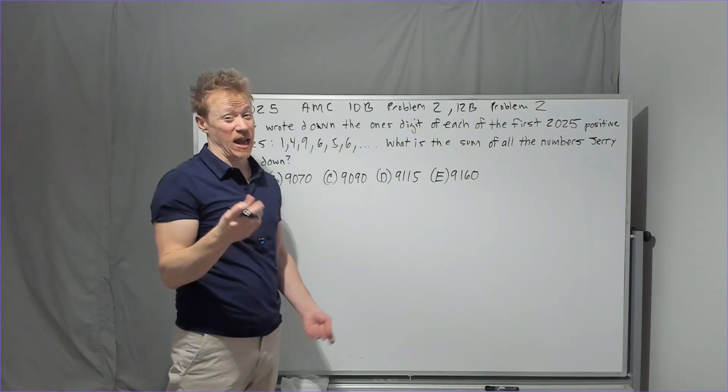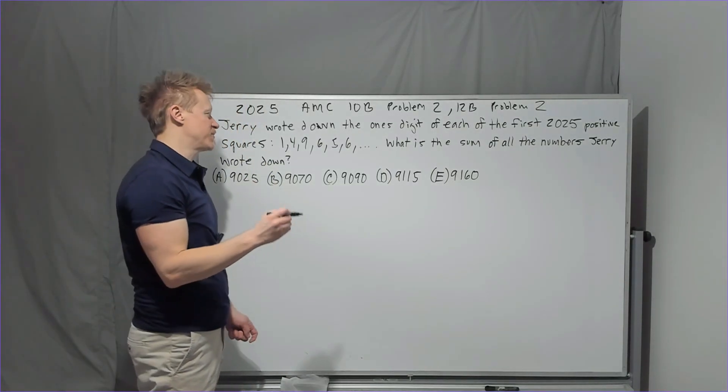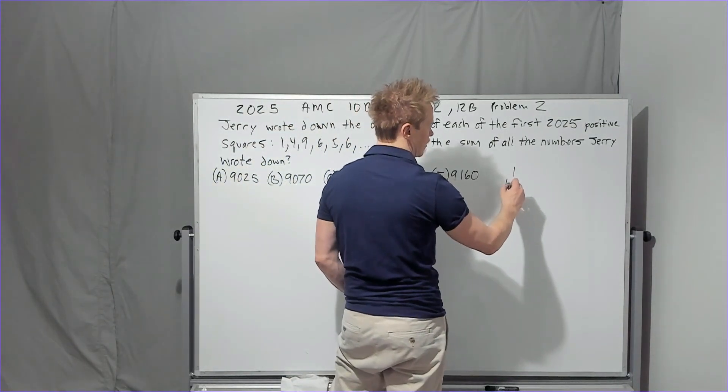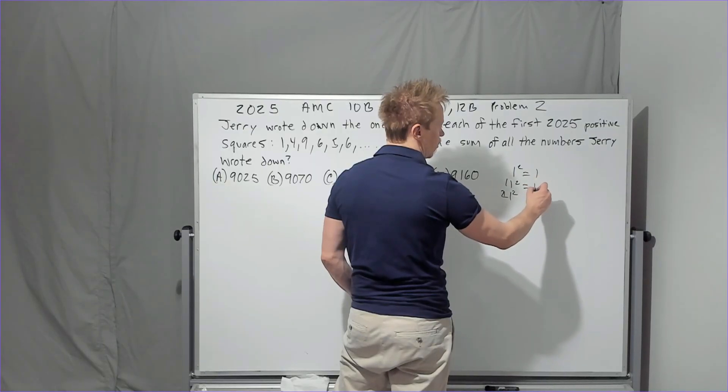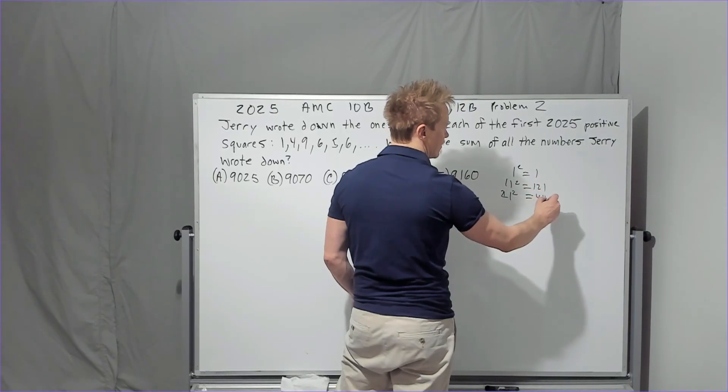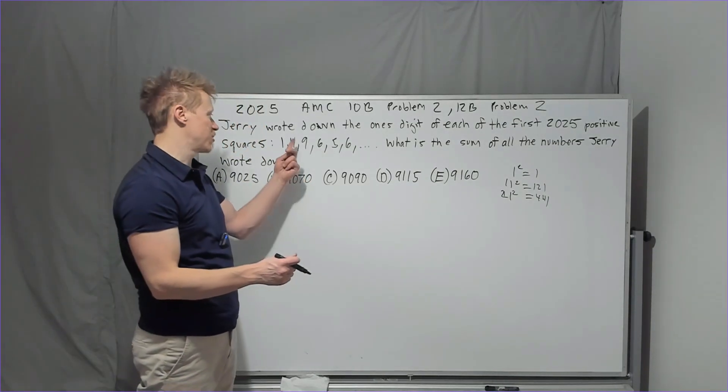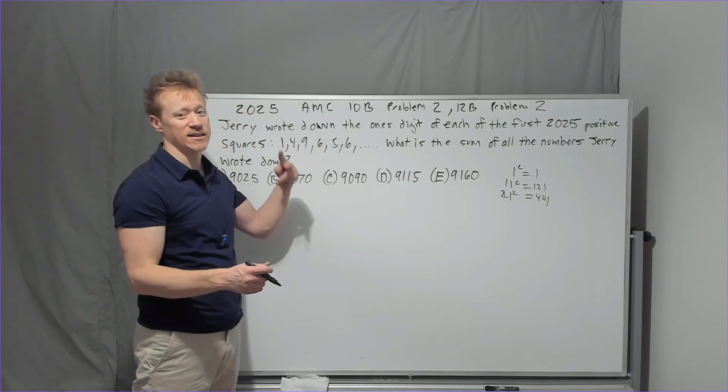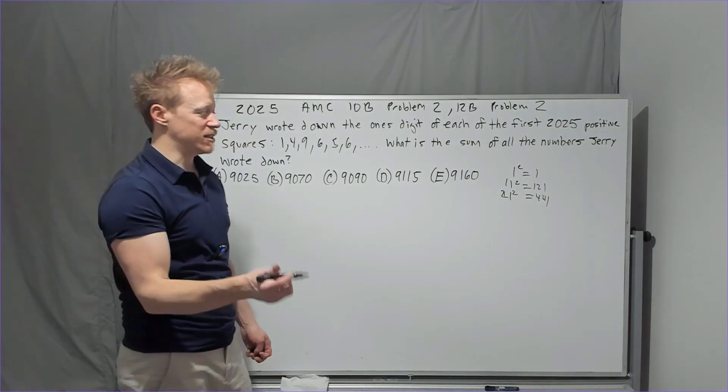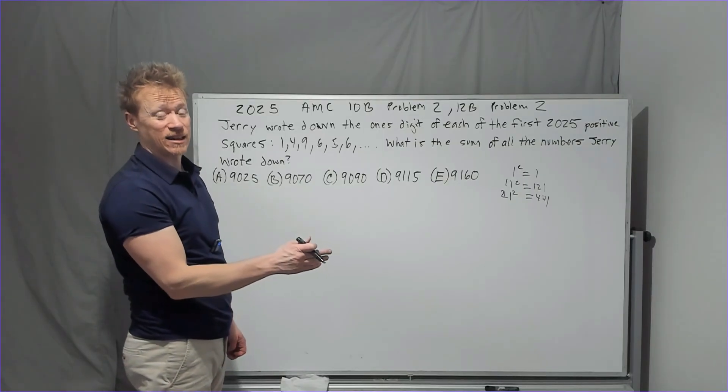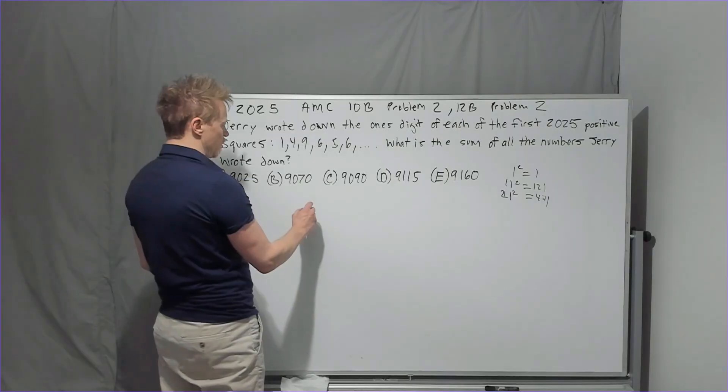At first you might be like, if you haven't done any number theory at all, it might seem like who's can possibly do this? But what you have to realize is that every single number that ends in one for instance will always end in one when you square it. Every number that ends in two will end in four when you square it. Every number that ends in three will end in nine and four will end in six and so on and so forth. So you don't need to do all of them. You just need to know what the sum of the first 10 is. And you can ignore 10s because they're all going to contribute zero to the ones digit.